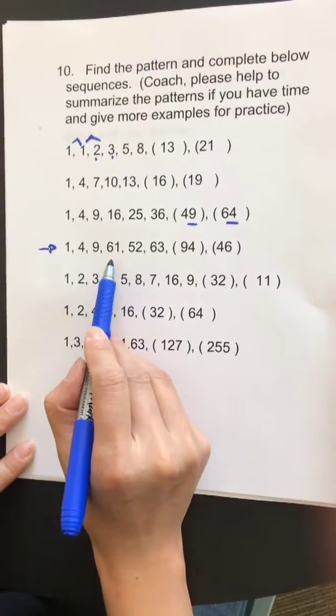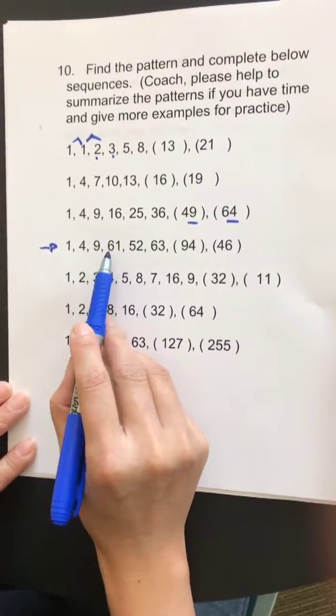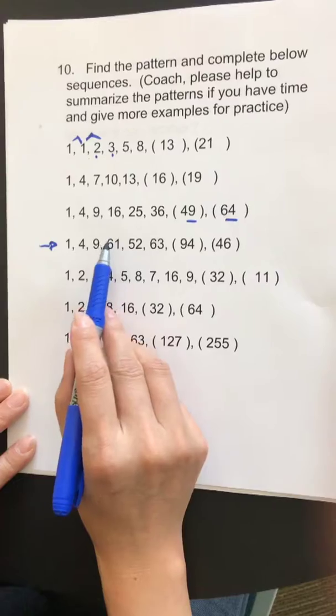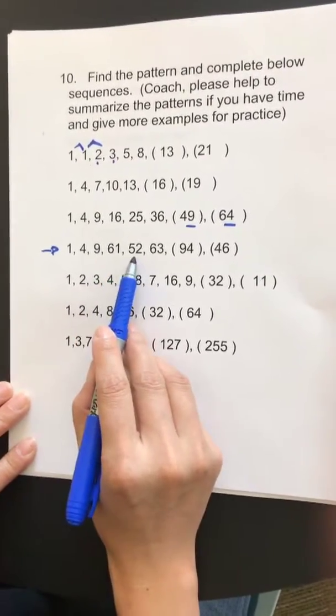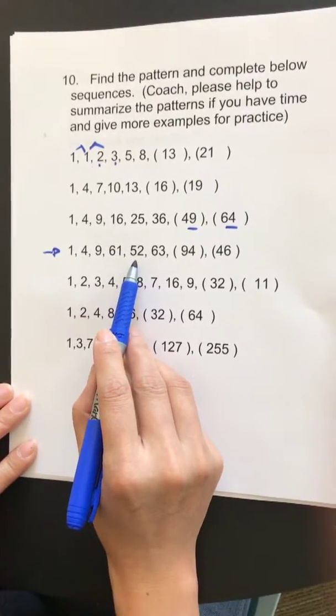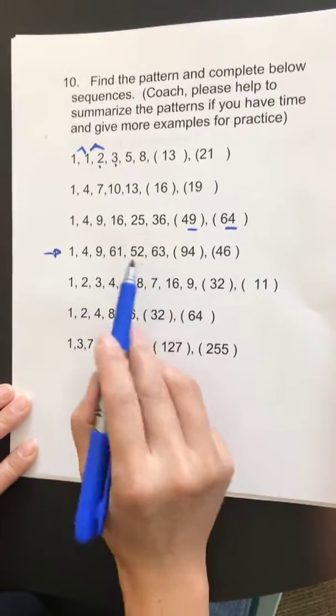So instead of 16, which is four squared, it flips the singles to the tens and the tens to the singles. Therefore, it's 61. And the fifth one should be five squared, which is 25, but now it's 52. It's the reverse - singles and tens place swapped.